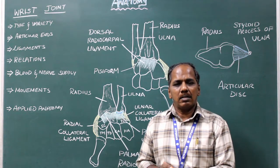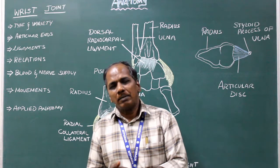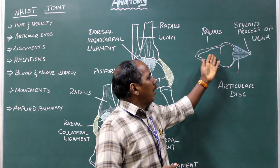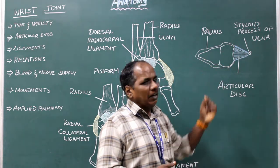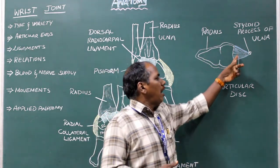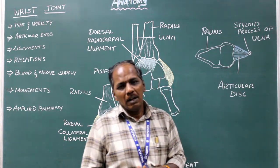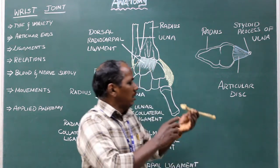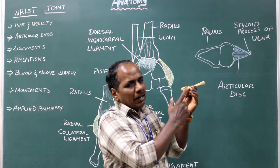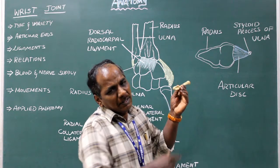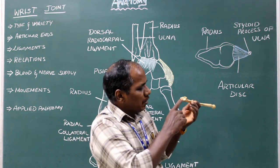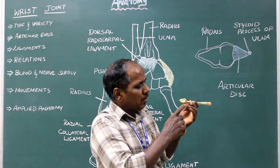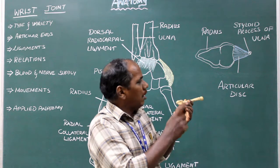Articular ends proximally: the inferior articular surface of the radius. This is the inferior articular surface of the radius, which has two articular parts — laterally a triangular part and medially a quadrangular part.